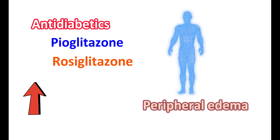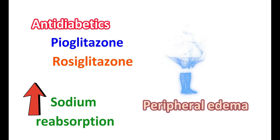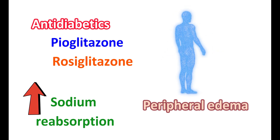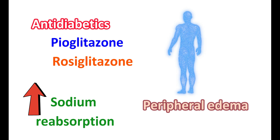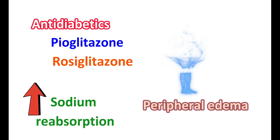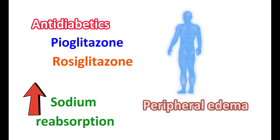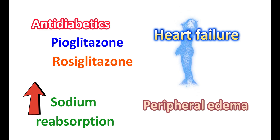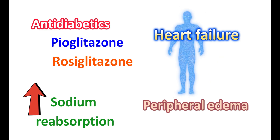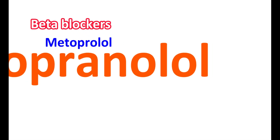Among antidiabetic medications, pioglitazone and rosiglitazone are two important medications significantly associated with peripheral edema. These two medications are called thiazolidinediones, or glitazones. Glitazones increase insulin sensitivity and reduce excessive glucose levels in the body; however, they also increase sodium reabsorption, resulting in fluid retention, peripheral edema, and weight gain. They can even increase the risk of heart failure. Therefore, glitazones should be carefully used in diabetic patients, and should be avoided in people with existing heart failure.